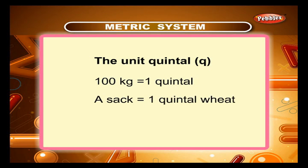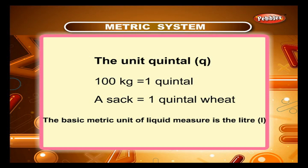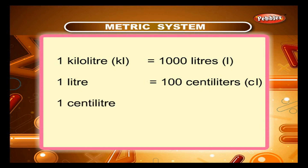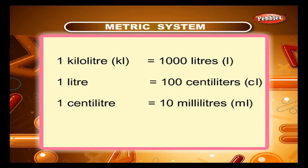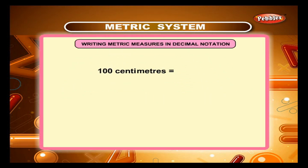The basic metric unit of liquid measure is the litre (l). 1 kilolitre (kl) is equal to 1000 litres; 1 litre is equal to 100 centilitres (cl); 1 centilitre is equal to 10 millilitres (ml); 1000 millilitres is equal to 1 litre.